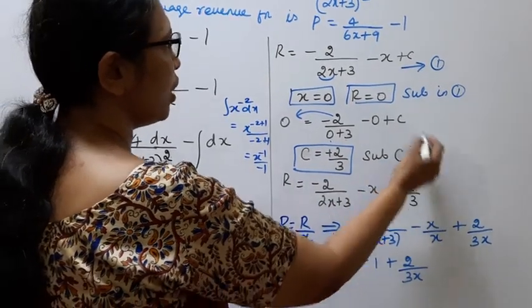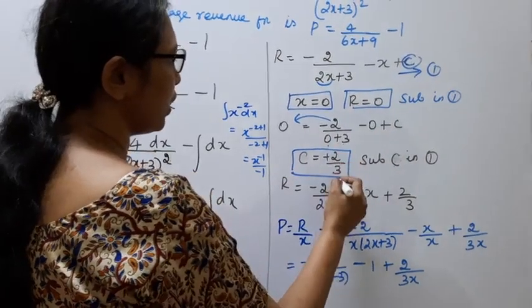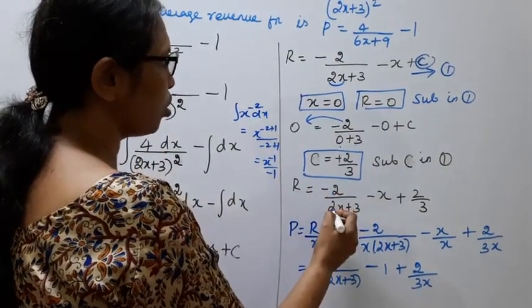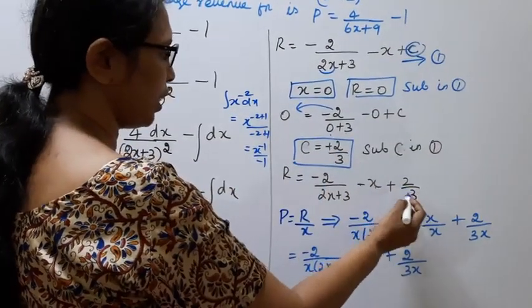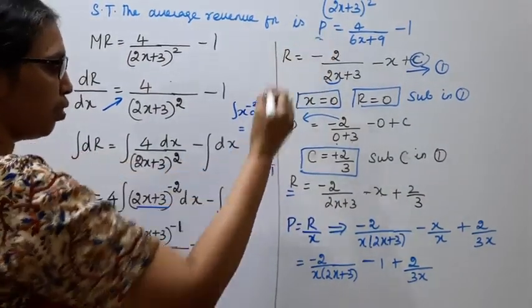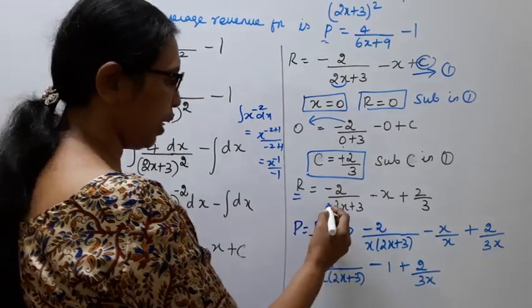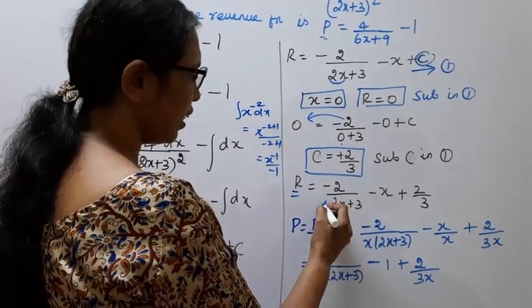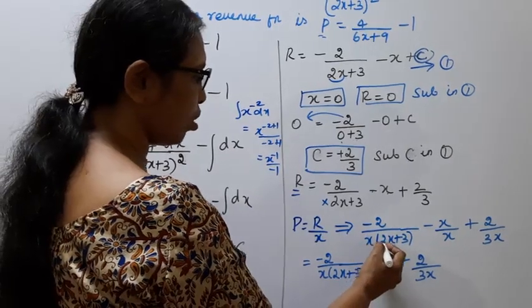Substitute C in equation 1: R = -2/(2x+3) - x + 2/3. Now we have P. Since P = R/x, P = [-2/(2x+3) - x + 2/3]/x.